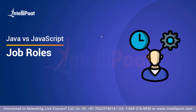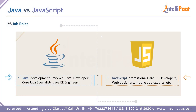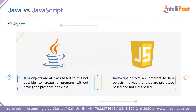Coming to point number eight — job roles. Java development involves roles such as Java developer, core Java specialist, Java EE engineer, and many others. JavaScript opens up even more job roles: web designer, front-end developer, back-end developer, mobile app expert, JavaScript developer, and solutions architect. Due to its immense popularity and active usage, JavaScript might open your door to more diverse job roles.